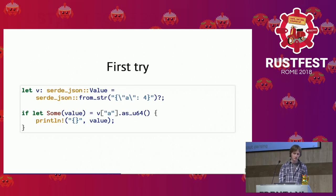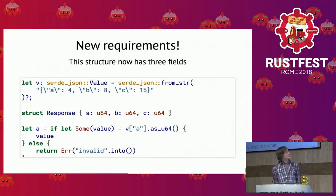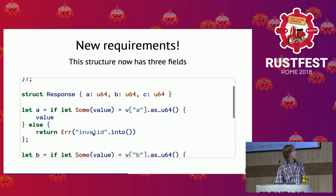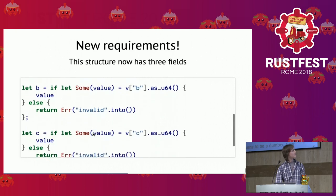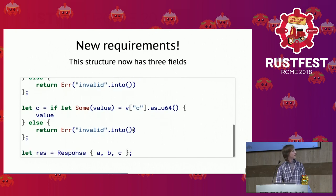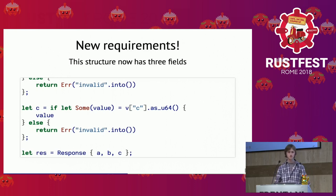Then next Monday arrives and new requirements arrive. The structure actually has three fields and we need to deal with this. In Rust we can write data types, so we write a struct called Response with three fields. We continue writing our code as before, except it got a bit longer — basically all the same code, just repeating the same pattern for each field.